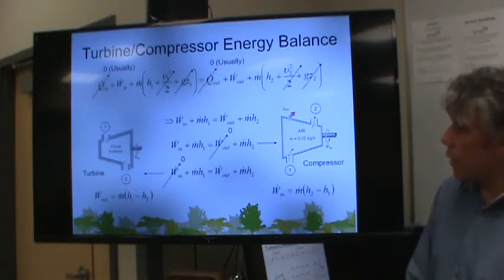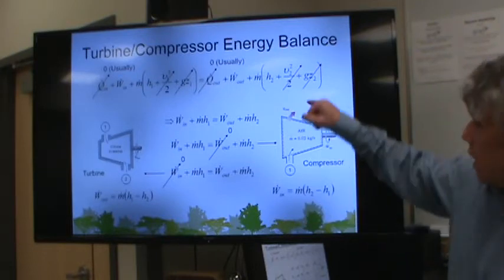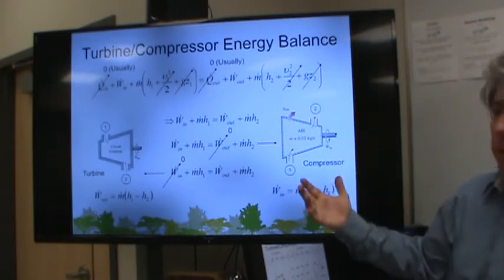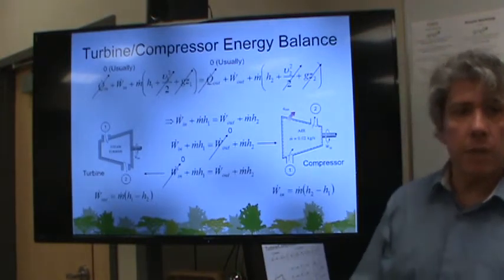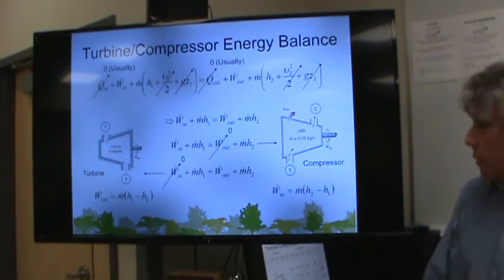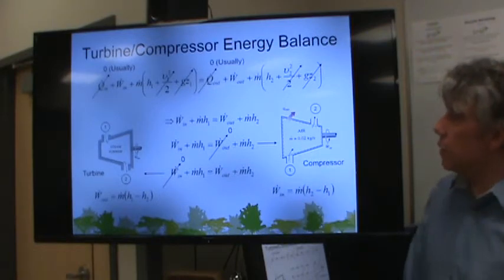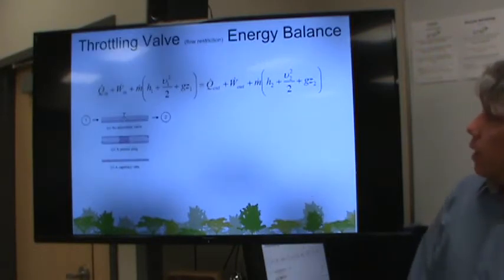So there are our energy balances for compressors and turbines. Now, obviously, if we have a compressor that has heat loss, which is very common, we can't get rid of Q dot L. That needs to be back in the equation. So our steady flow equation for a compressor would look a little bit different because it would include a heat loss term.